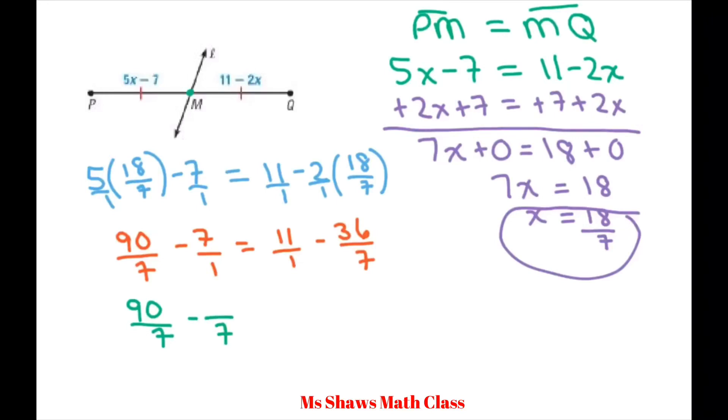I'll put a 7 here. So to make that a 7, you multiply 7 times 7, that's 49. And we need a 7 here, so 7 times 11 is 77, because 77 divided by 7 is 11. And let's see what we get.